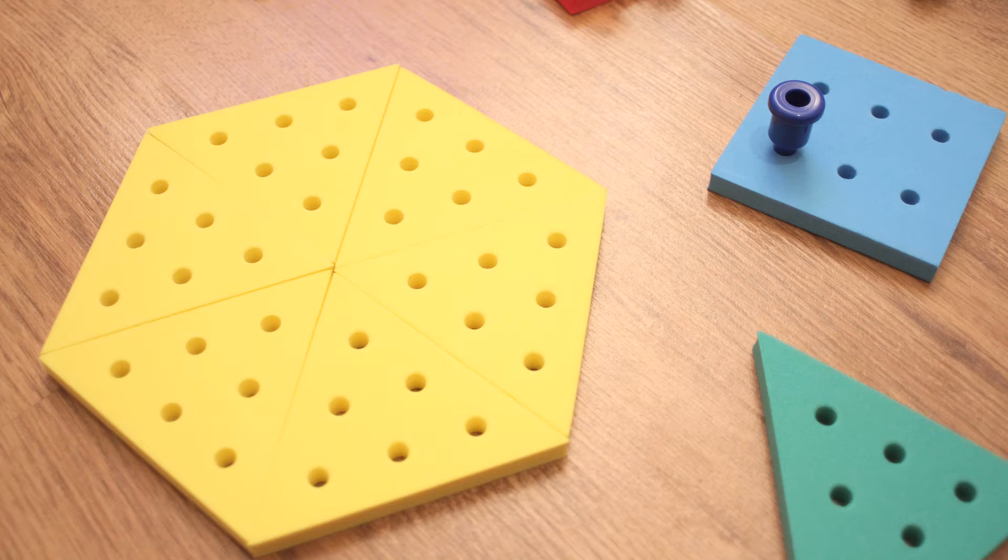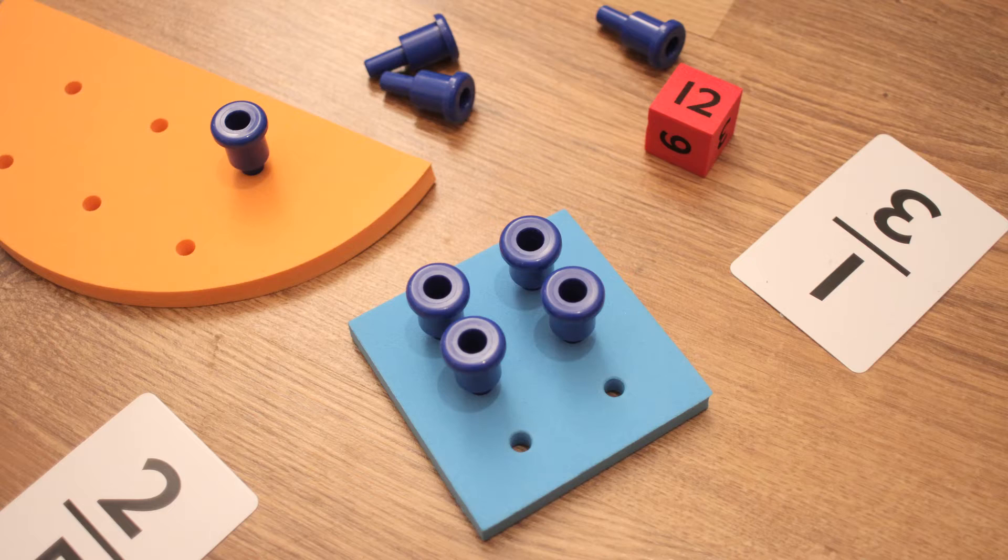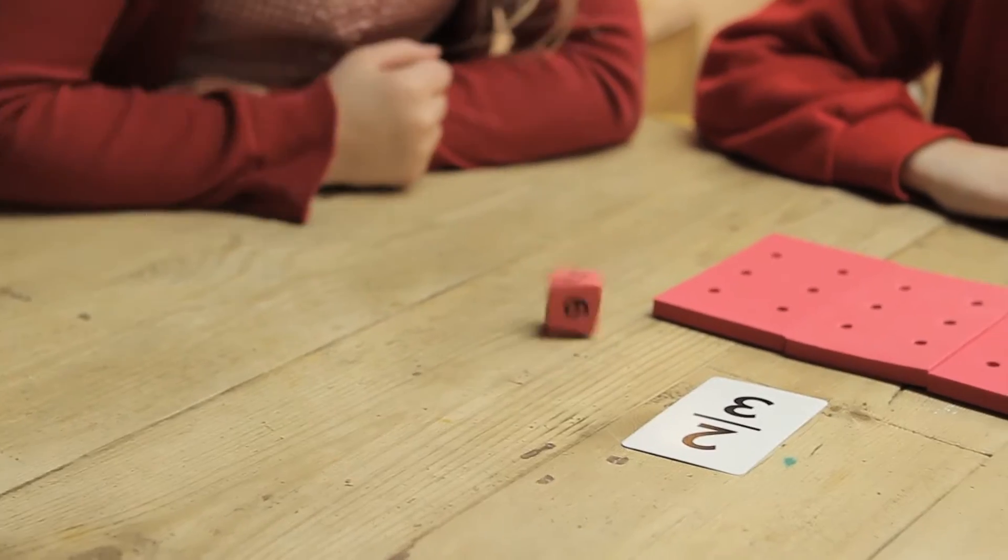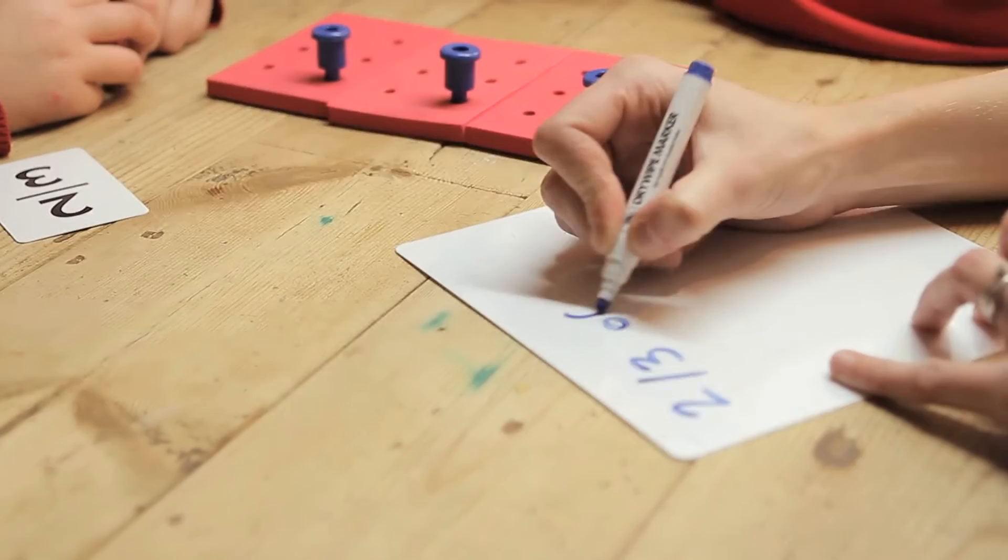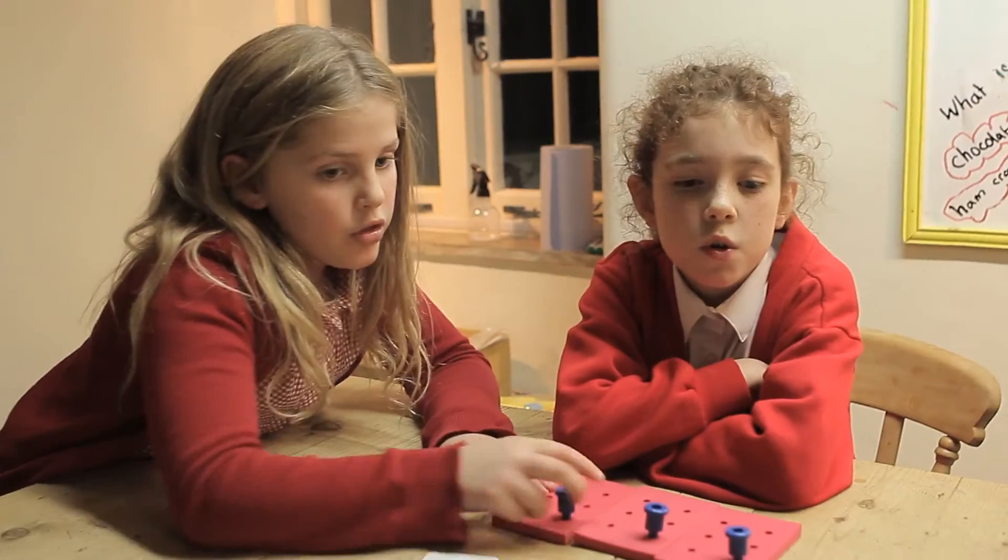A card is drawn, the child selects an appropriate foam shape and then rolls the dice to set the challenge. Pegs are then counted out equally between the parts of the shape and divided up as required to give the answer.